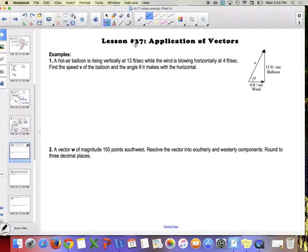All right, so we're doing lesson 37, which is on applications of vectors. There's going to be several things that we're going to be doing with applications throughout the chapter, but this is kind of the first thing. The first one says a hot air balloon is rising vertically at 13 feet per second while the wind is blowing horizontally at 4 feet per second. What's going to happen is the wind is going to push this hot air balloon off course.